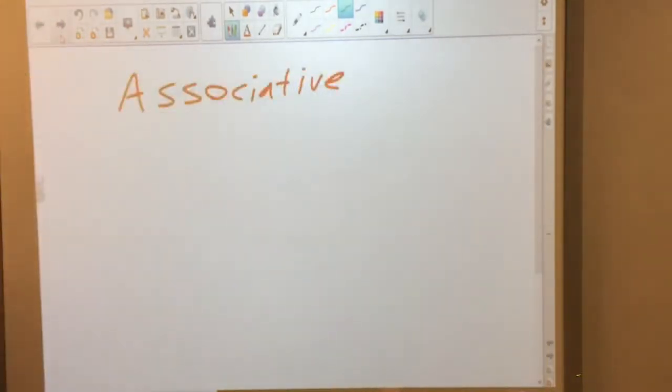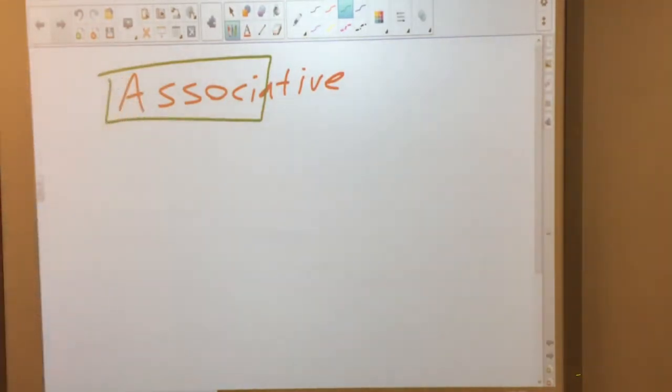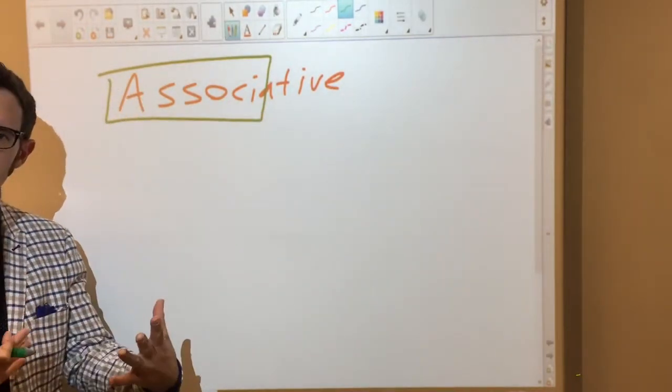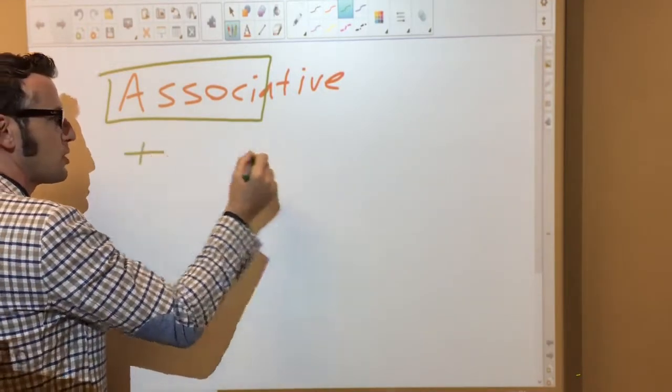The next property I want to talk about is the associative property, which is like associating, your group, your friends, people you work with, etc. And the associative property also works for addition and multiplication.